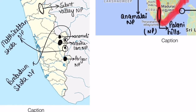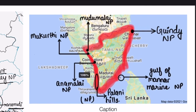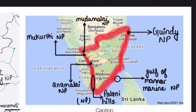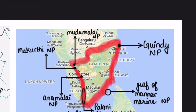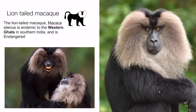Let's revise the national parks in this region. Kerala's parks: Silent Valley, Mathikettan, Pambadum, Eravikulam, Anamudi, and Periyar. Tamil Nadu's parks: Mudumalai, Mukurthi, Anamalai, Palani Hills, Gulf of Mannar, and Guindy National Park. The next animal is the lion-tailed macaque.